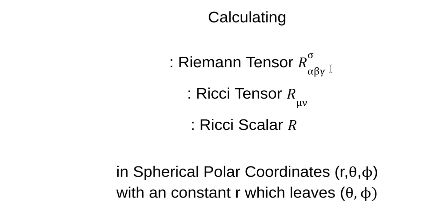So what I'm going to do here is calculate the Riemann tensor, Ricci tensor, and the Ricci scalar. I'm going to do that in spherical polar coordinates r, theta, phi, but the r is going to be a constant, which just leaves two components, theta and phi. This is called the two-sphere problem.